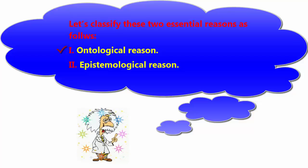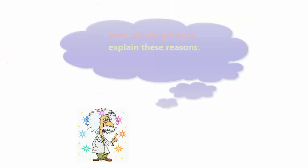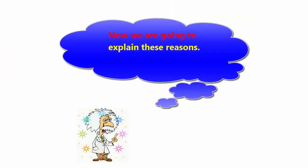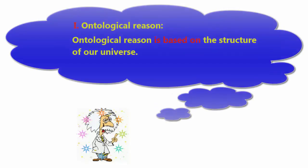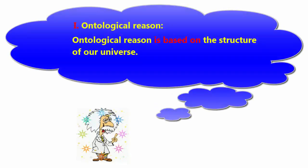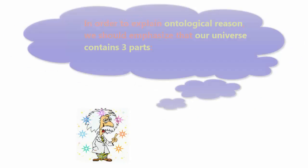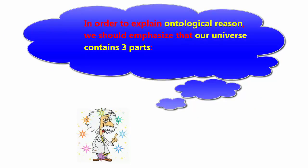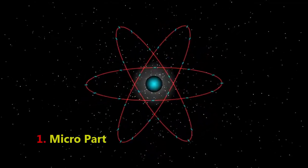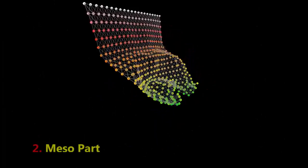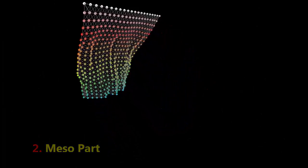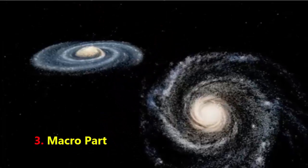Let's classify these two essential reasons as follows: 1. Ontological Reason, and 2. Epistemological Reason. Now, we are going to explain these reasons. The ontological reason is based on the structure of our universe. Our universe contains three parts: 1. Micropart, 2. Mesopart, 3. Macropart.